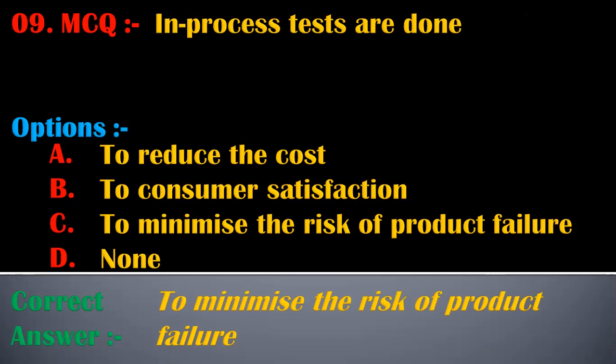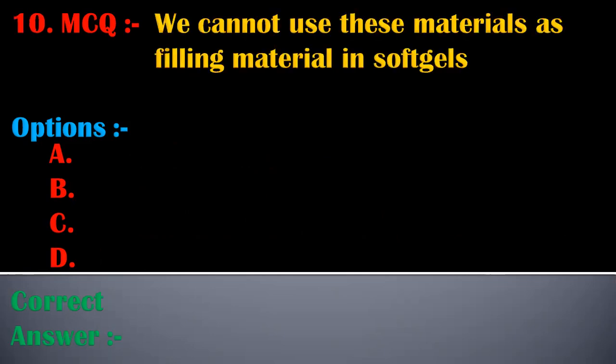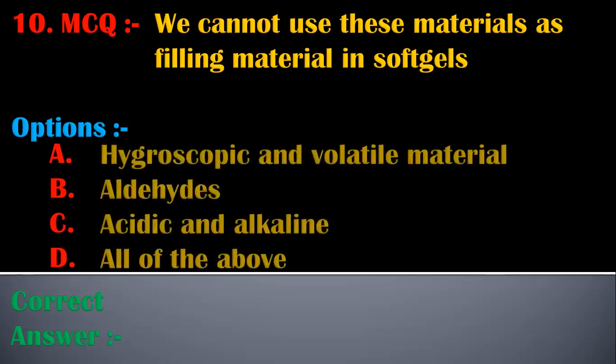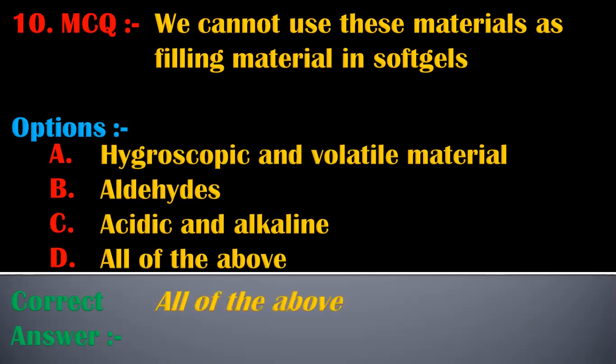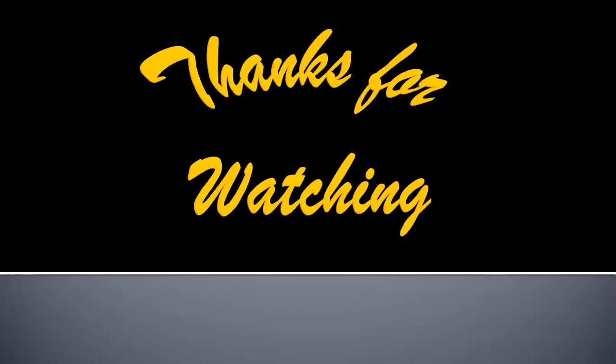The tenth MCQ is: we cannot use these materials as filling material in soft gels — options are hygroscopic and volatile material, aldehydes, acidic and alkaline materials, or all of the above. The correct answer is all of the above. All these materials — hygroscopic and volatile materials, aldehydes, and acidic and alkaline materials — cannot be used as filling material in soft gels. Thanks for watching!